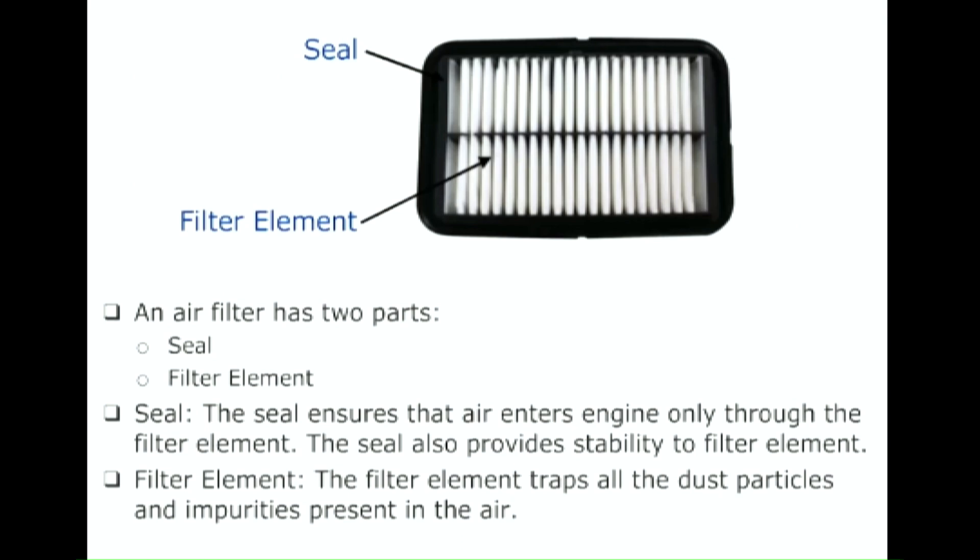Construction of air filter. An air filter has two parts: a seal and a filter element. The seal ensures that air enters the engine only through the filter element, and also provides stability to the filter element. The filter element traps all the dust particles and impurities present in the air.